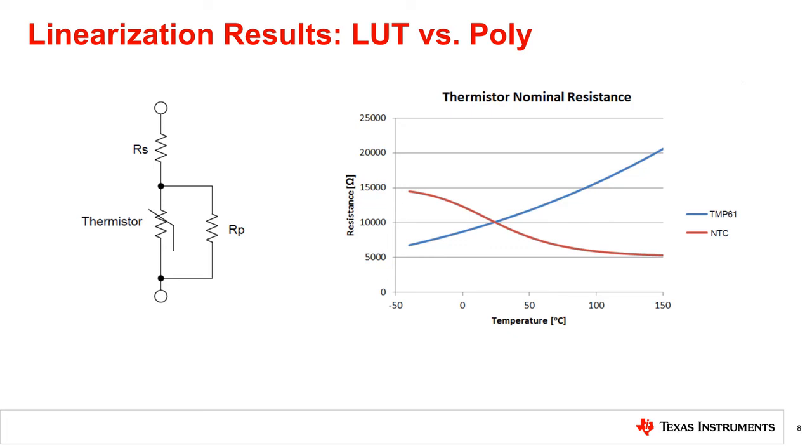For example, placing the thermistor in a voltage divider is considered a voltage mode linearization because the divider output voltage is directly used. Other times, a thermistor is linearized to be used as a temperature compensation resistor, such as for LCD temperature compensation. This approach is called resistance mode linearization.